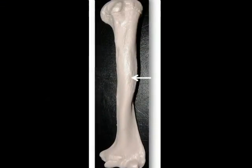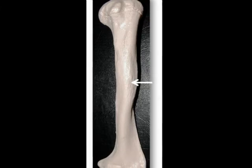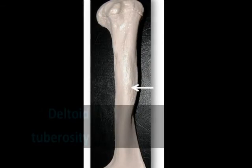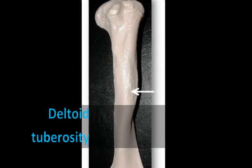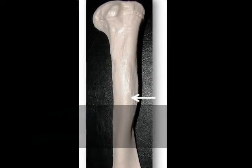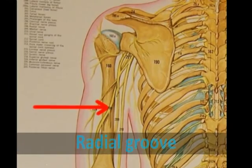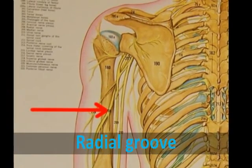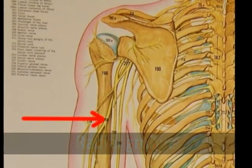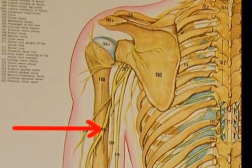Located at the middle of the shaft on its lateral side is a rough v-shaped region called the deltoid tuberosity. This is an attachment point for the tendons of the deltoid muscle. The radial groove is a depression on the posterior humerus that runs alongside the deltoid tuberosity and contains the radial nerve.